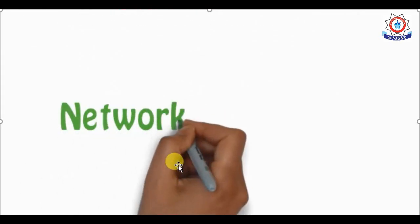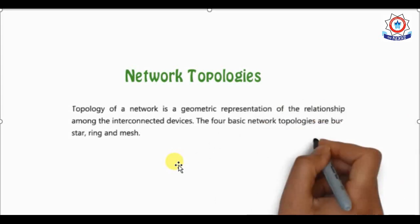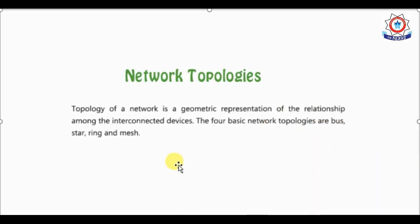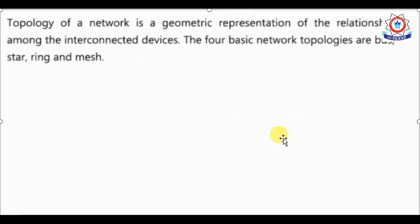Now we will see network topologies, which we have also read in our previous class. Topologies are basically a geometric representation of the relationships among interconnected devices. The four basic network topologies are bus, star, ring, and mesh.